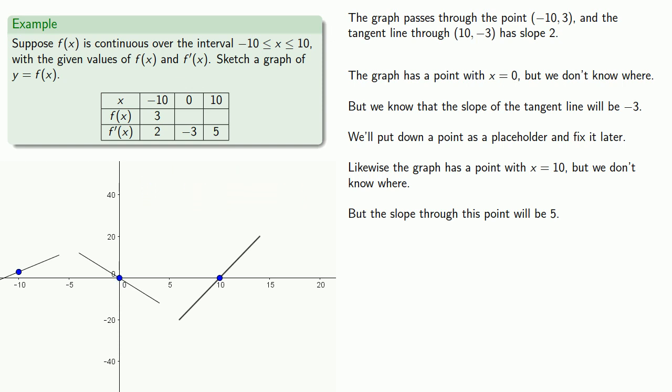Let's go ahead and fix that. Because we know our function is continuous, we need to adjust the vertical locations of these points to give us a continuous graph. Because we've already incorporated all of the available information, we can adjust the vertical position any way that we want to, provided that we don't contradict any of the given information. So we might randomly move some pieces up and end up with a graph looking something like this.